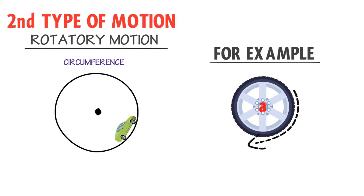To sum up, we learned that there are three types of motion: translatory motion, rotatory motion, and vibratory motion. Motion along a straight or curved path is translatory motion. Motion along the circumference of a circle is called rotatory motion. Back and forth motion of a body is called vibratory motion.